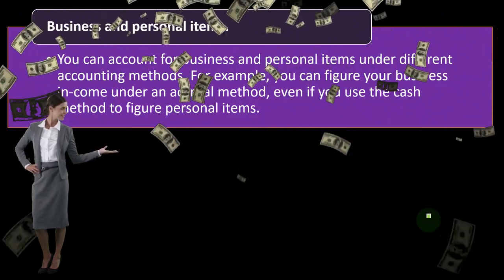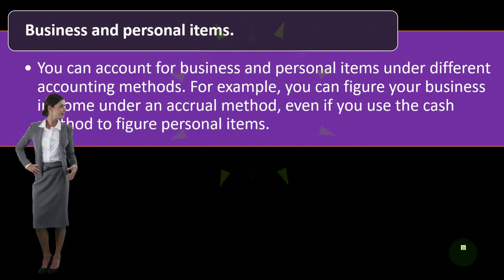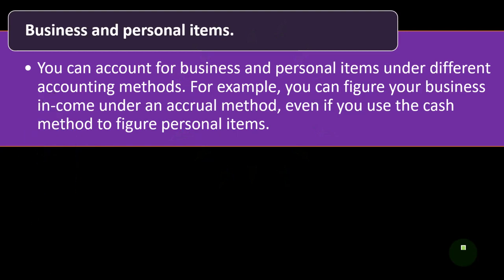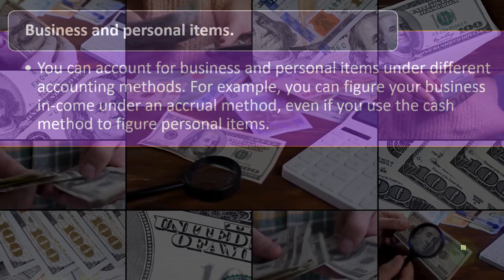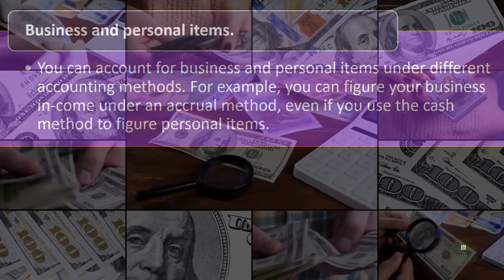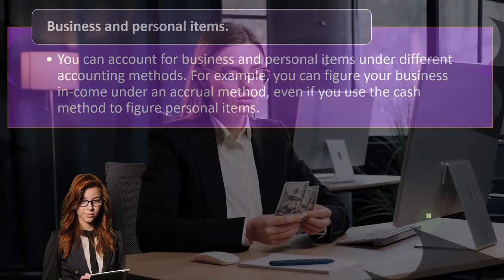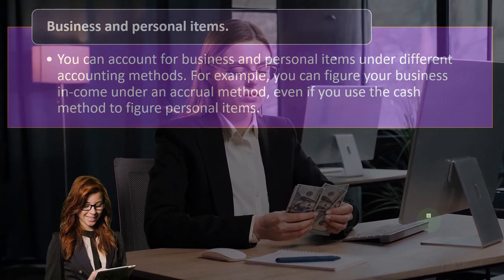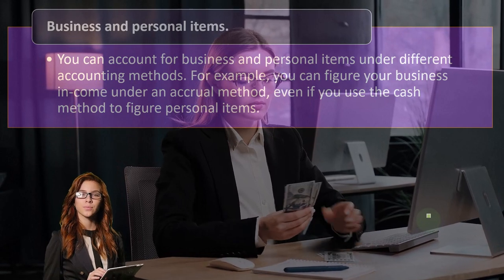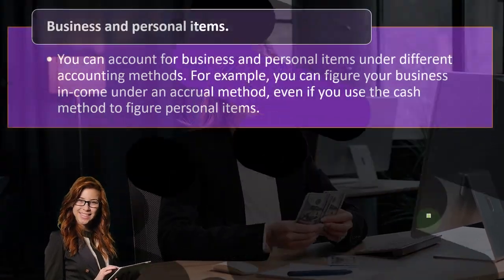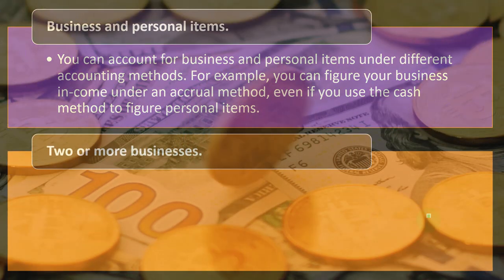You can account for business and personal items under different accounting methods. For example, you can figure your business income under an accrual method even if you use a cash method to figure your personal items. Most deductions on a Form 1040 — such as on Schedule A and above-the-line deductions — are on a cash-based type of system. That doesn't mean your business income on a Schedule C can't be on an accrual method. Generally, the business income on Schedule C is somewhat separate from the rest of the tax return, which may still be on a cash-based system.